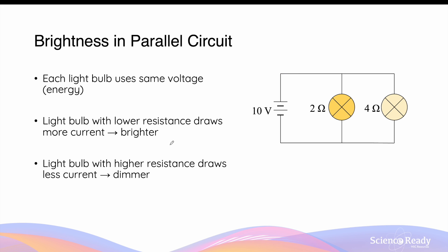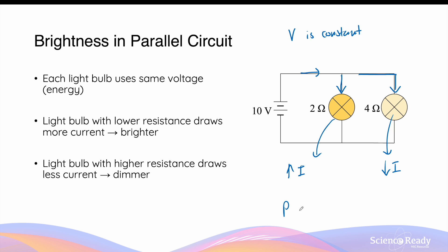Something else about parallel circuits is quite different from how series circuits work. In a series circuit, the light bulb with higher resistance uses more power and ends up being brighter. In a parallel circuit, this is quite the opposite. The voltage across each light bulb is constant, so we are doing the same amount of work to push electrons through both light bulbs despite differences in resistance. Current will preferentially flow through the light bulb with lower resistance, for example 2 ohms, compared to the one with 4 ohms. The light bulb that draws greater current will have higher power, calculated as I squared times R, and therefore be brighter. The light bulb with higher resistance draws less current and will be dimmer.